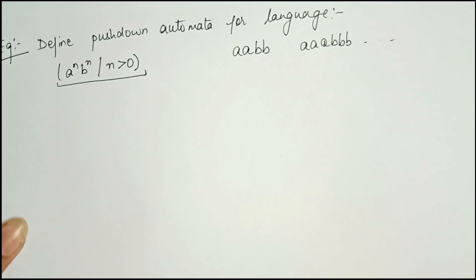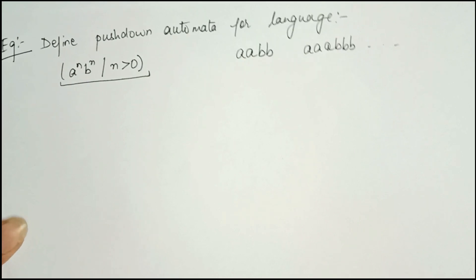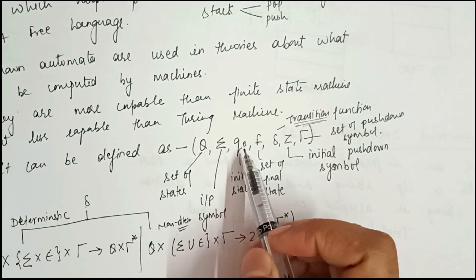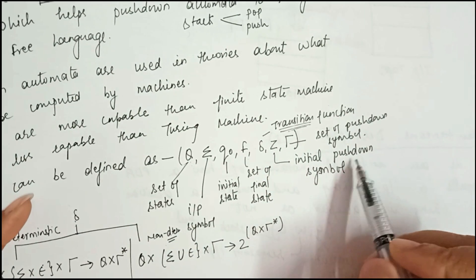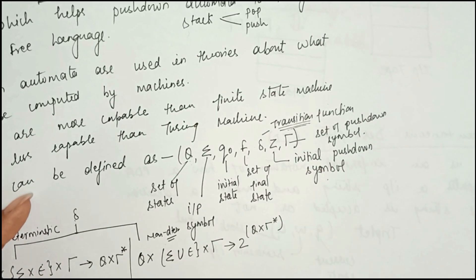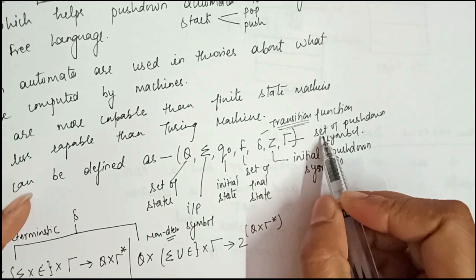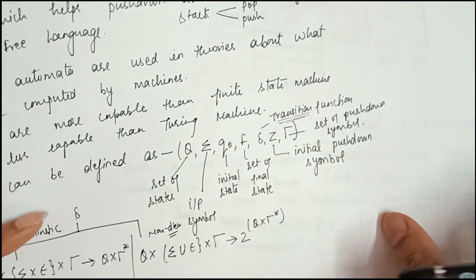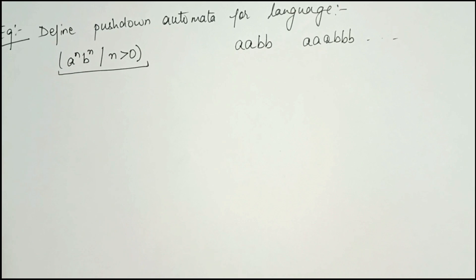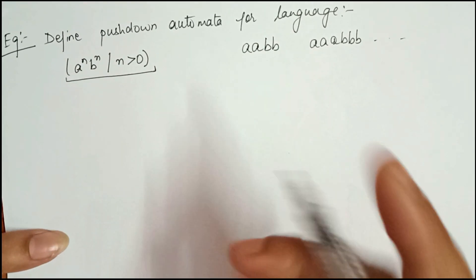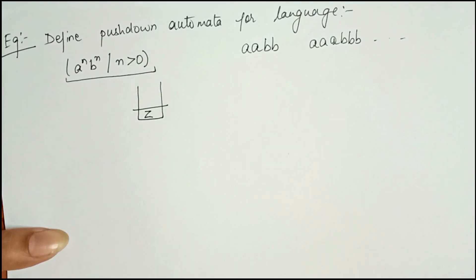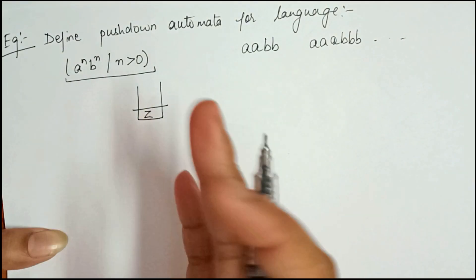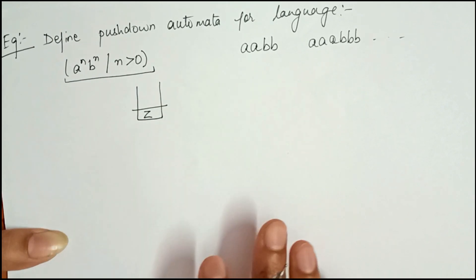For constructing a pushdown automata, we use the symbols Q, Σ, q₀, F, δ, Z, and Γ. Z is the initial pushdown symbol always contained at the bottom of the stack, and Γ contains the set of pushdown symbols. Before starting this problem, we know that the stack always contains Z at the bottom.